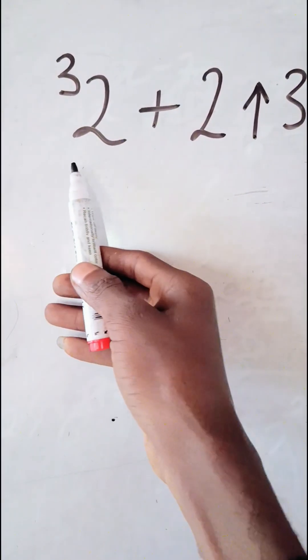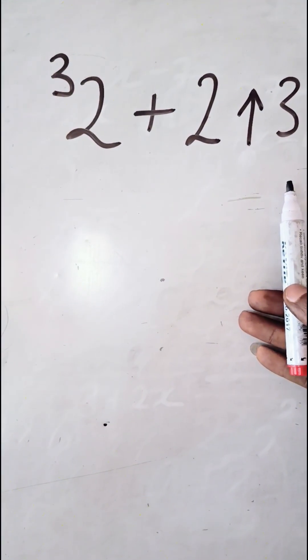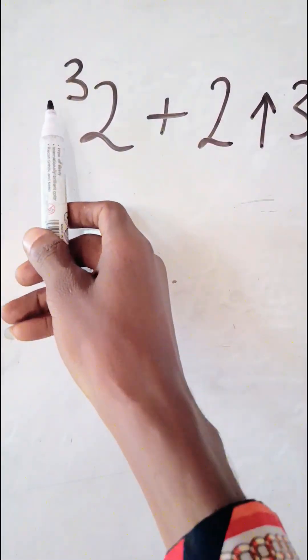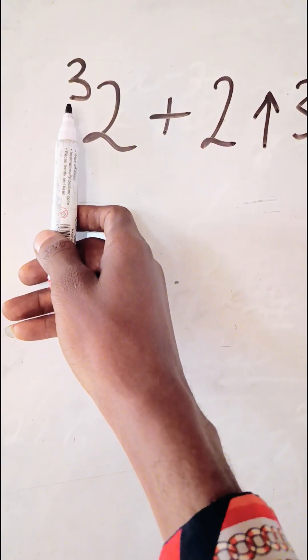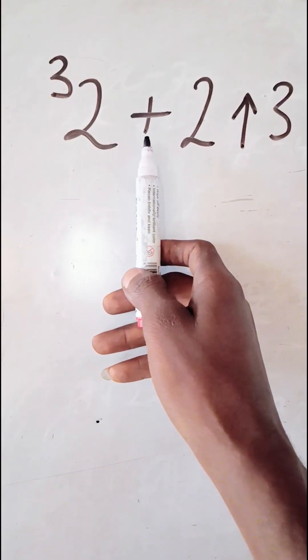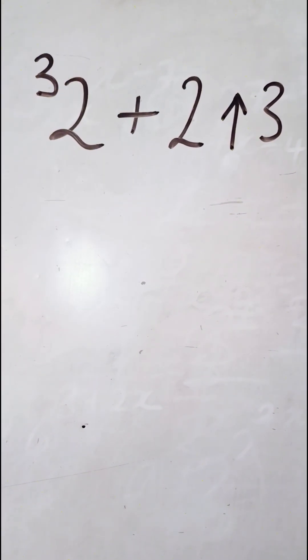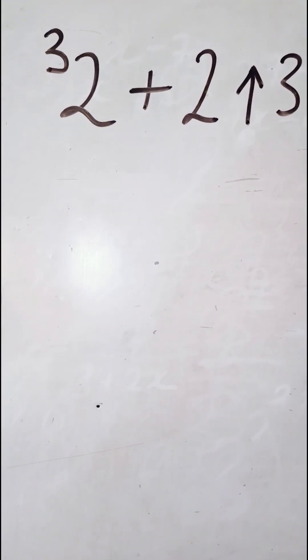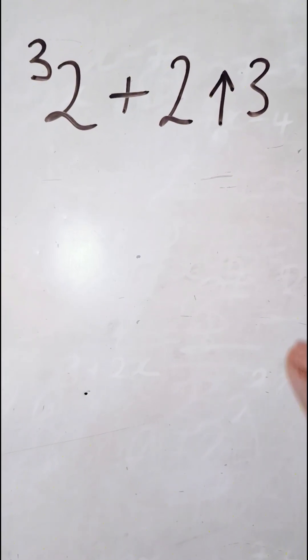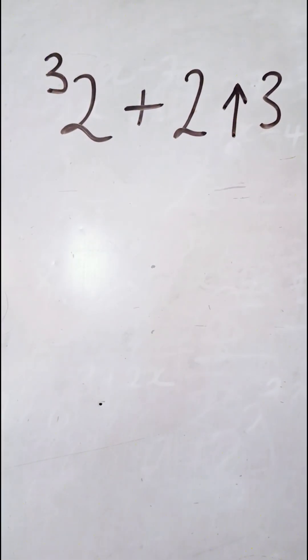All right, so we are asked to solve this question. I guess some persons don't even know the meaning of these: three raised power in front before the two plus two, then an arrow and three. So places will be confused what is going on here. But after this class now you'll understand the meaning of all these things. They are very simple.